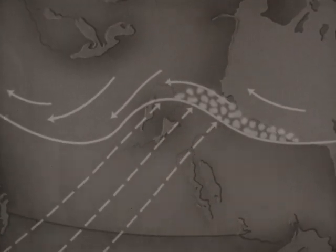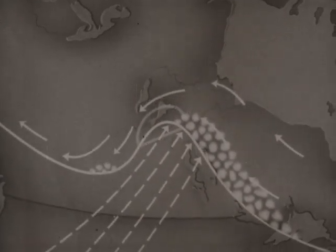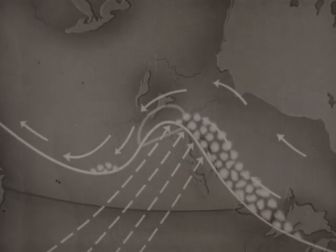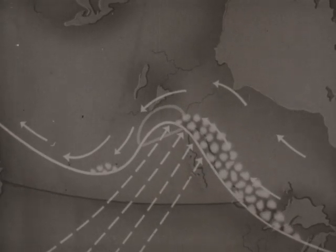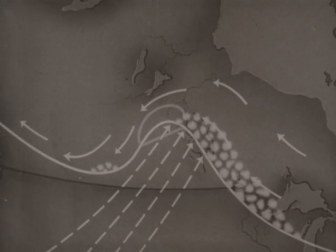As the cycle advances, clouds spread over a larger area along the warm front and begin to appear along the cold front. There is precipitation over an extended area along the warm front, which for technical reasons is not here shown.